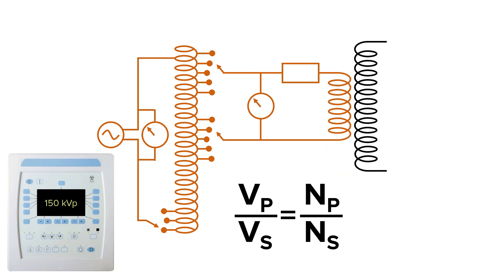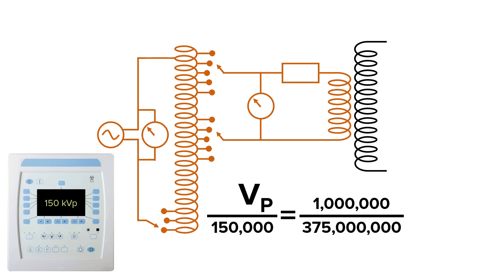So if we do the math, we want voltage on the secondary side to be 150,000 volts. The number of turns are predetermined and cannot change, so the number of turns on the primary side would be 1 million, and the secondary side would be something like 375 million turns. If we did the math, then the auto transformer would need to produce about 400 volts to get an end result of 150,000 volts after the step-up transformer. Pretty amazing, huh?